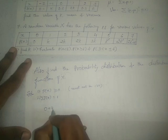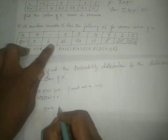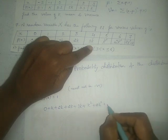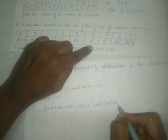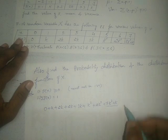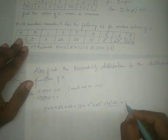Adding all the P(X) values: 0 plus K plus 2K plus 2K plus 2K plus 3K plus K squared plus 2K squared plus 7K squared plus K — for X equals 7. I have written all the terms, and that sum must be equal to 1 by the second property.